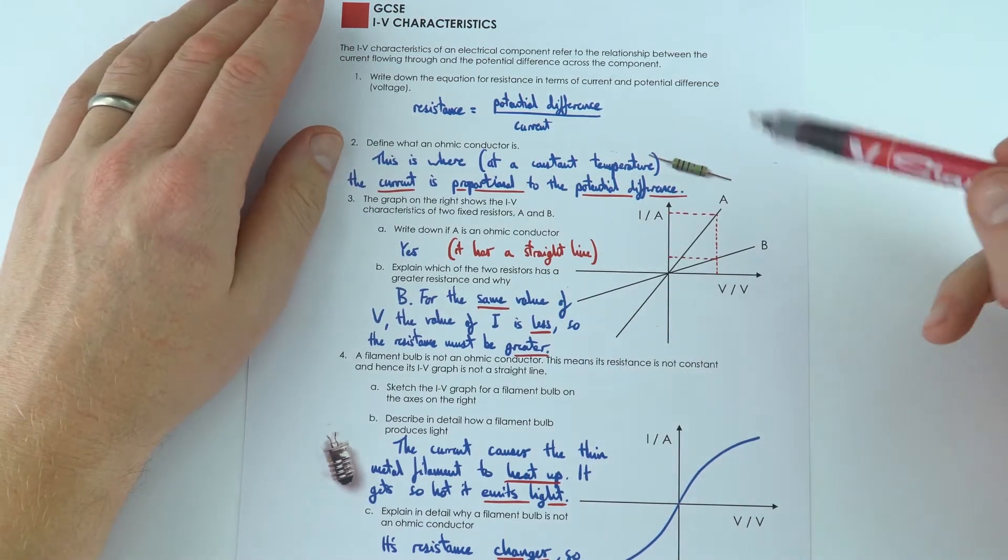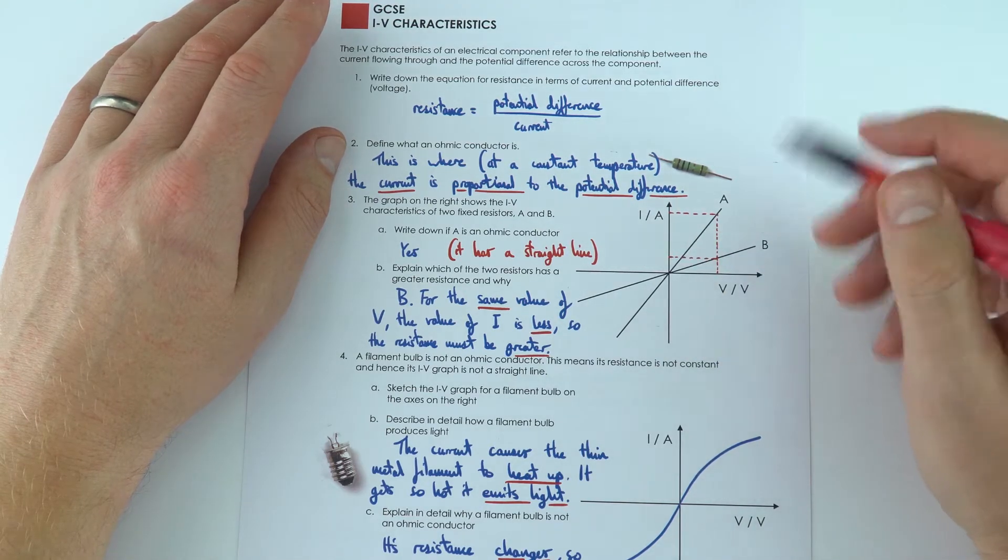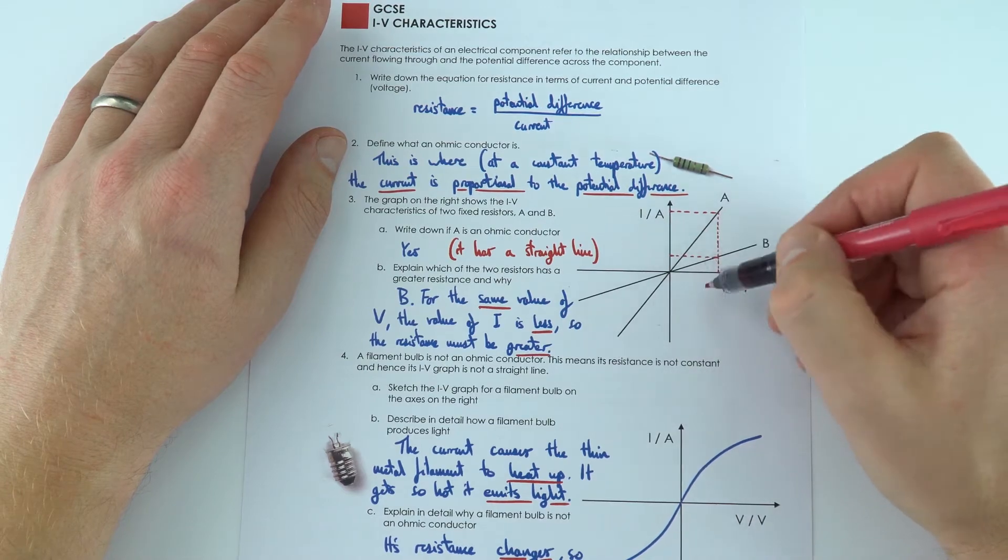Now over here we've got a graph showing two resistors A and B. So this is a graph that you should be familiar with the shape. These act as an ohmic conductor and I is indeed proportional to V.